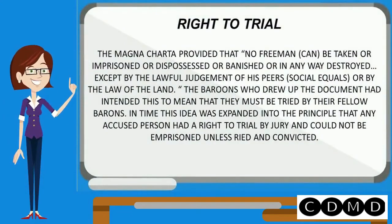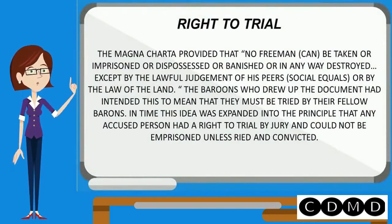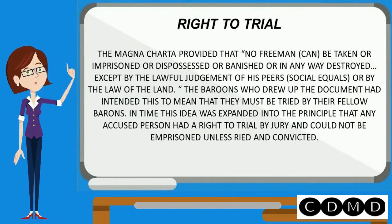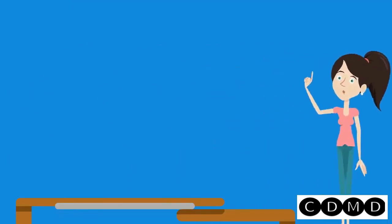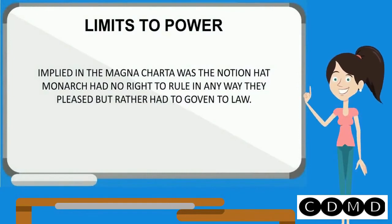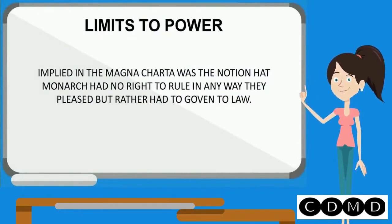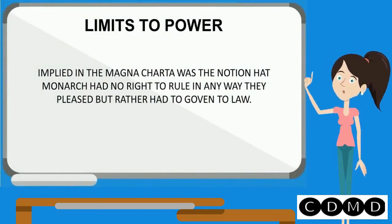The right to trial: The Magna Carta provided that no freeman can be taken, imprisoned, dispossessed, or banished, or in any way destroyed except by the lawful judgment of his peers or social equals, or by the law of the land. Limits to power: Implied in the Magna Carta was the notion that monarchs had no right to rule in any way they pleased but rather had to govern by the law.